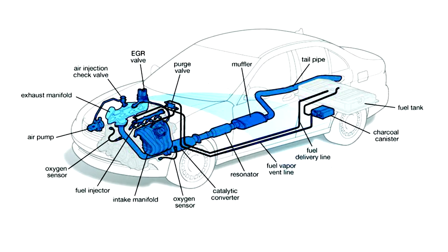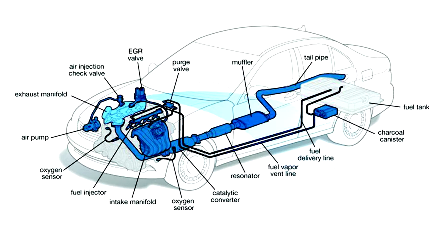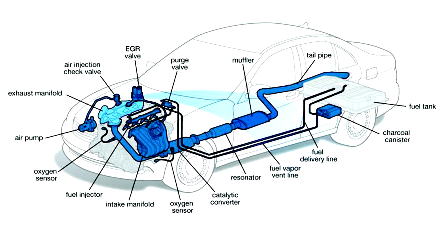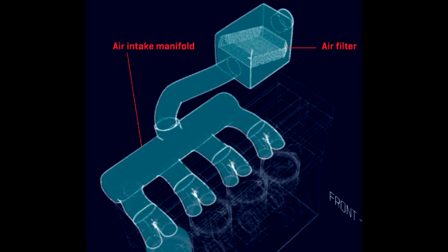Now let's look at other systems that support this combustion process. Air intake: air comes in through the air filter and then into the intake manifold where it mixes with fuel before being sucked into individual cylinders through intake ports.